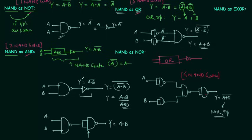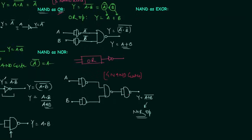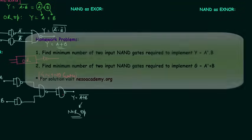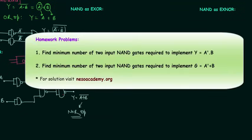Now we will implement XOR gate using the NAND gate, but I think we are pushing the time, so we will implement XOR and XNOR gates in the next lecture. Try to solve the homework problems given to you and post your answers in the comment section.